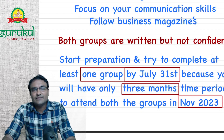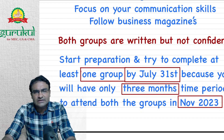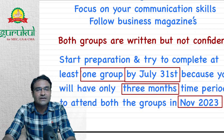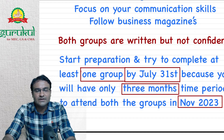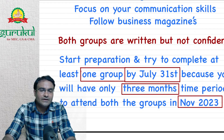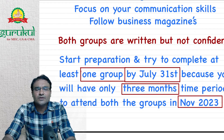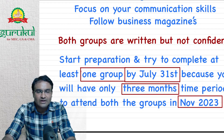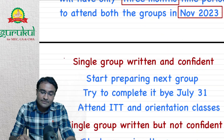In case the results are negative, don't worry — you have already completed one group's preparation. Now you have another three months: August, September, October. You can complete the next group within three months very easily. You need not worry at all. Even if results are positive, this revision knowledge will be useful in your articles.